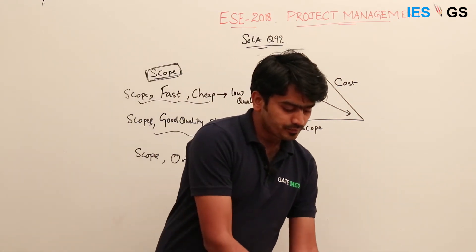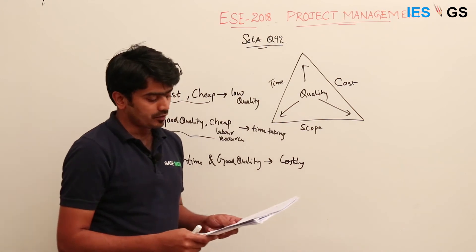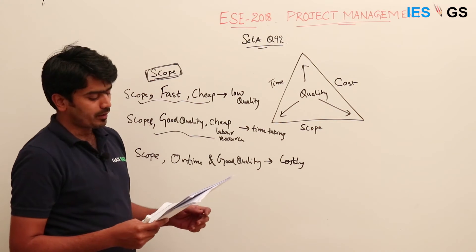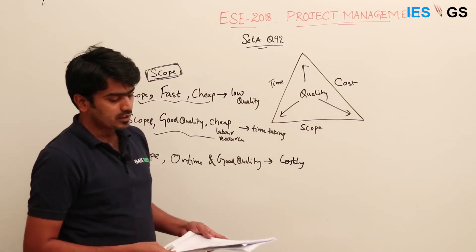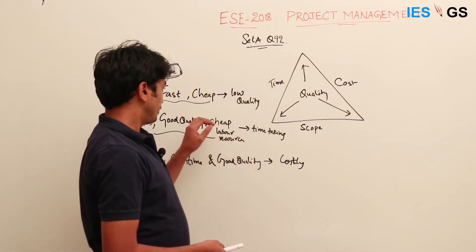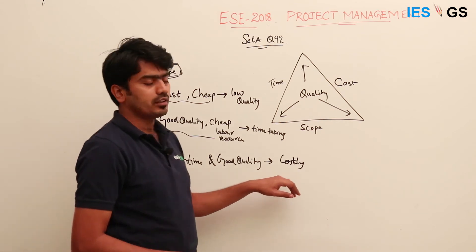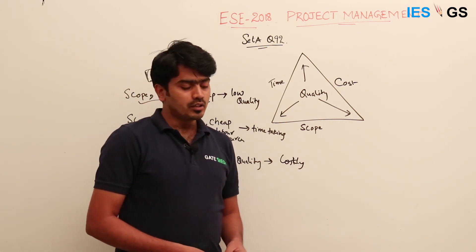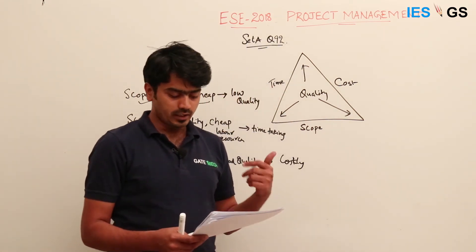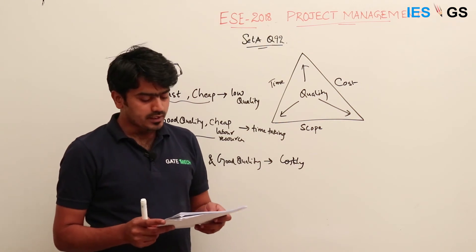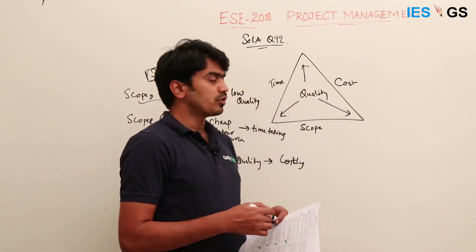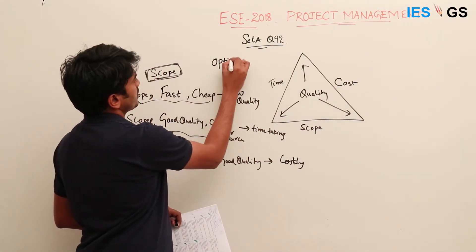Statement two says only any two of the four dimensions can be pre-assigned and others must abide by them. But you can see that three can also be fixed to arrive at the fourth dimension. So this statement may not necessarily be true, because we are seeing other possible cases also. Statement one is true, but statement two is false. The correct answer is option C.